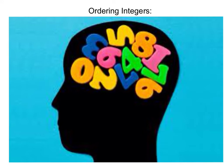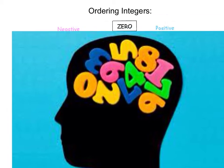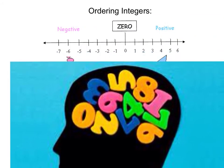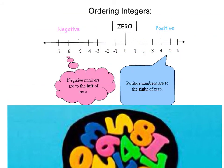Now we will take a moment to discuss ordering integers. You are already very familiar with ordering whole numbers, but ordering integers is slightly more difficult. When we look at the number line below, we need to remember negative numbers are to the left of 0 and positive numbers are to the right of 0. The further to the left of 0 a number is, the smaller it is.